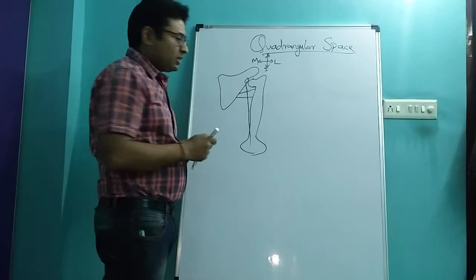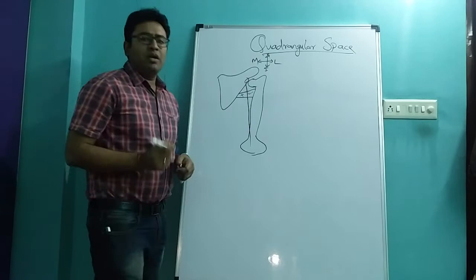So here what we are going to see is three spaces: this one is quadrangular space, this is the upper triangular space, and this is the lower triangular space.